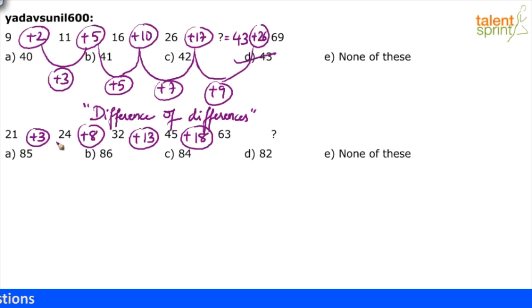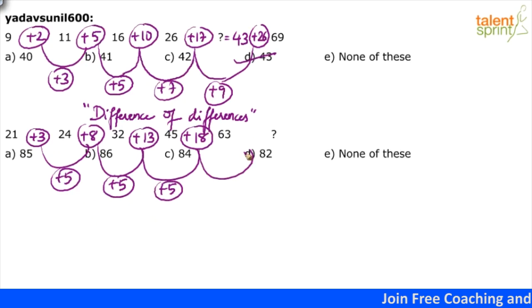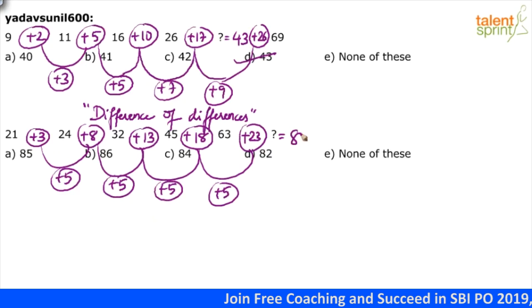The differences are increasing by 5. You see? This is plus 5. This again is plus 5. This again is plus 5. 13 plus 5 is 18. So next one also should be plus 5. So 18 plus 5, 23. 63 plus 23, 86. Yeah, so I think option B would be the answer, 86.